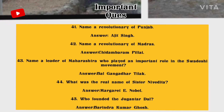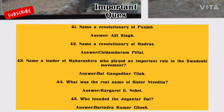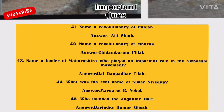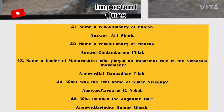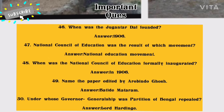Number 43: Name a leader of Maharashtra who played an important role in the Swadeshi movement. Answer: Bal Gangadhar Tilak. Number 44: What was the real name of Sister Nivedita? Answer: Margaret E. Noble. Number 45: Who founded the Jugantar Dal? Answer: Barindra Kumar Ghosh. Number 46: When was the Jugantar Dal founded? Answer: 1906.